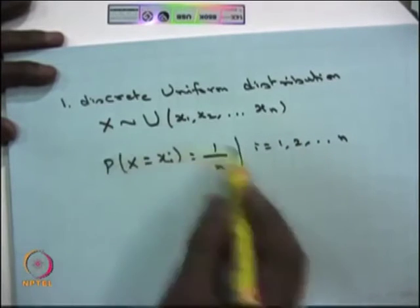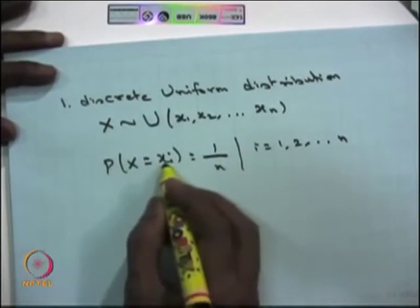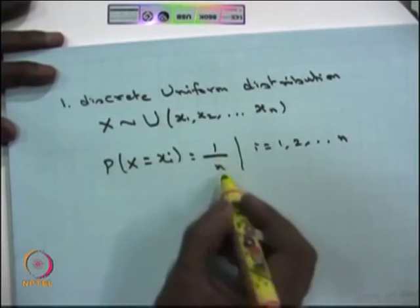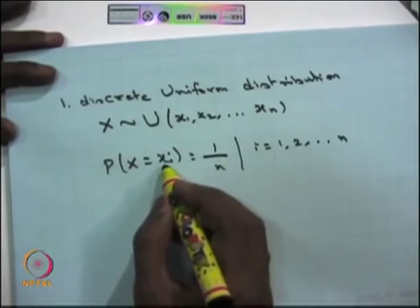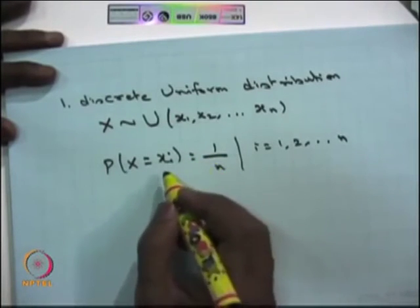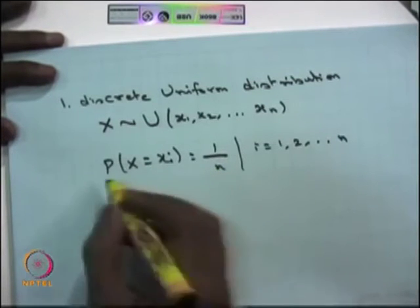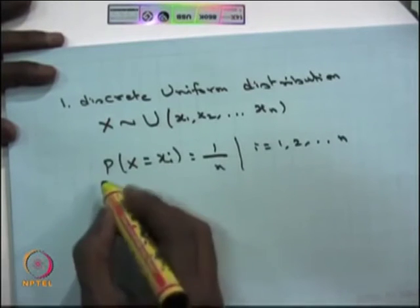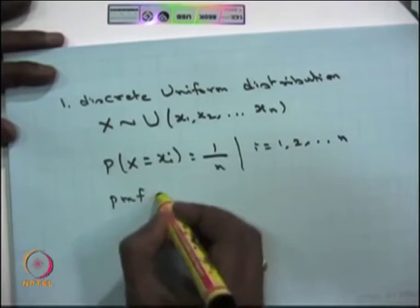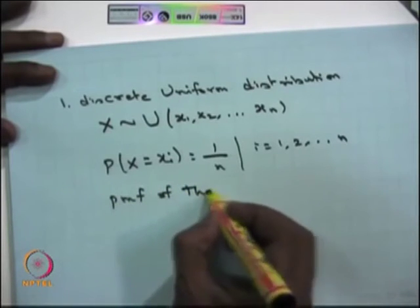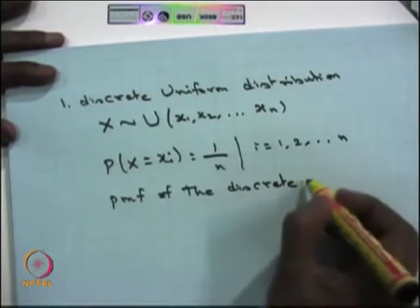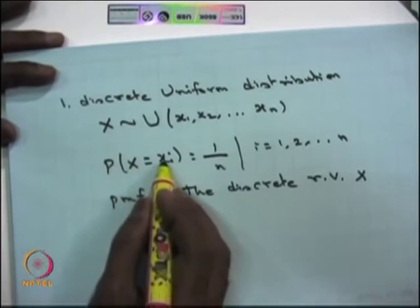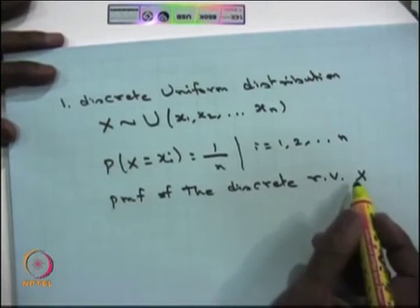This satisfies the PMF properties: the summation over all Xi's equals 1, and the probability P(X = Xi) is greater than or equal to 0. For the Xi's it is greater than 0, and at all other points it is 0. Therefore it satisfies the probability mass function of a discrete random variable, and P(X = Xi) = 1/n is the PMF of the discrete uniform random variable X.